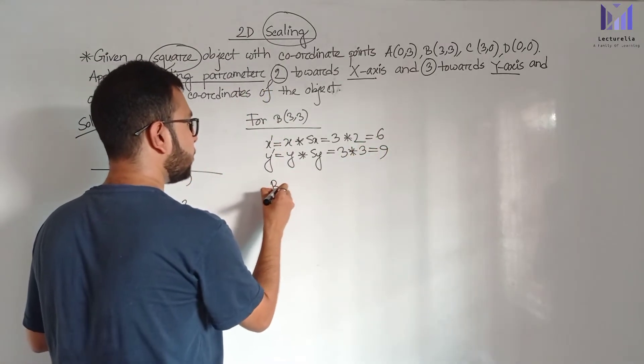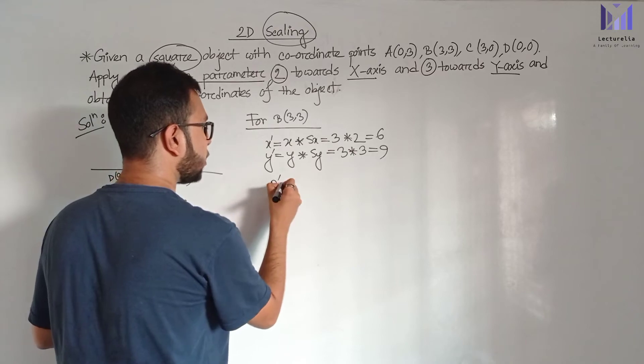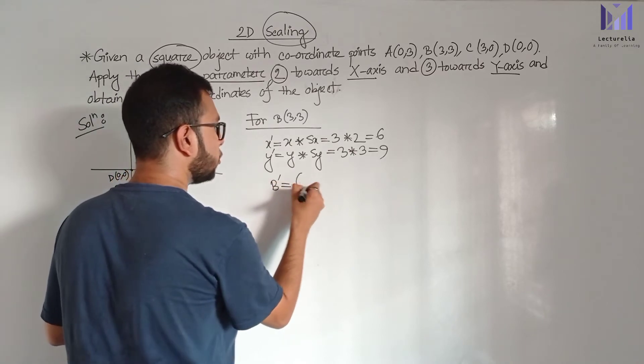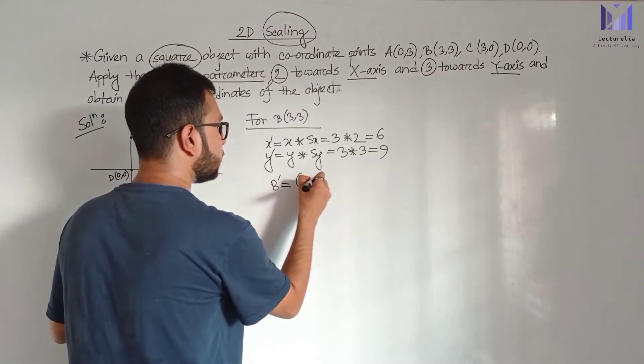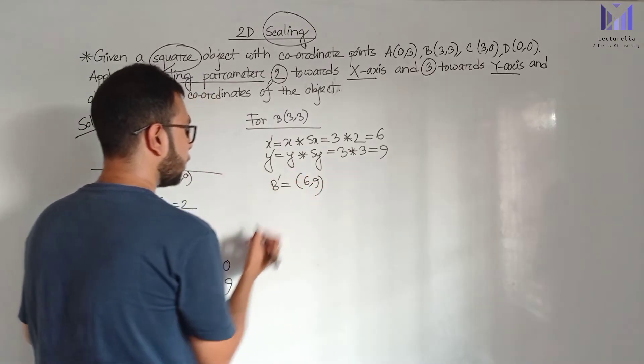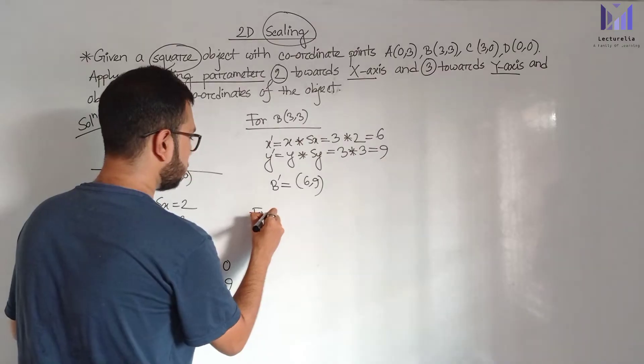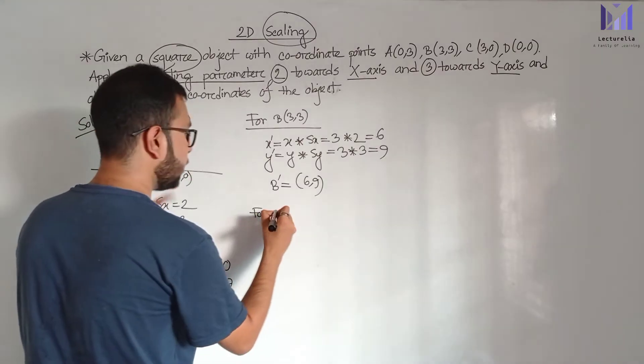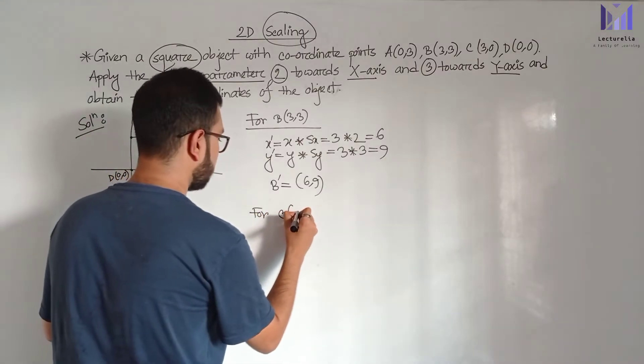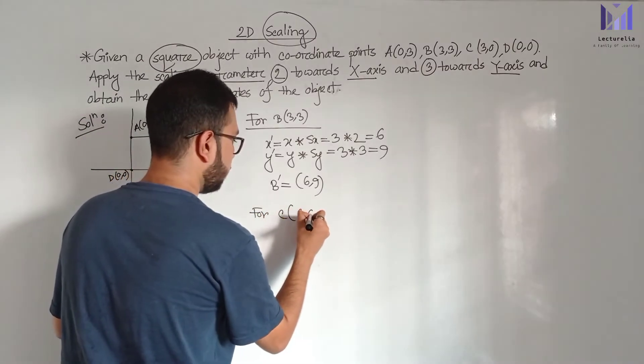For point B: x-prime equals 6, y-prime equals 9. So B-prime coordinate is (6, 9).